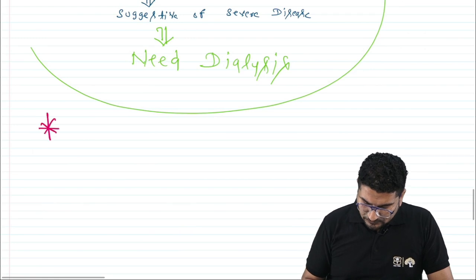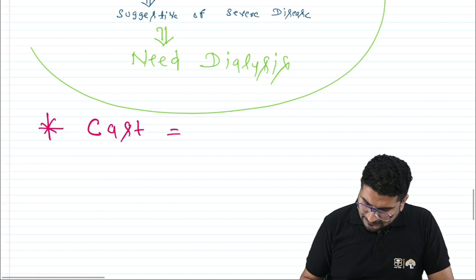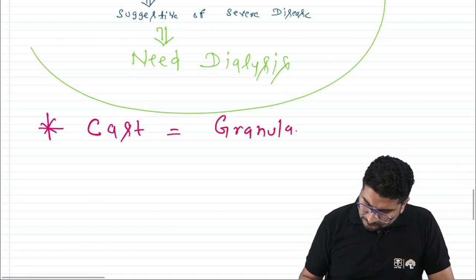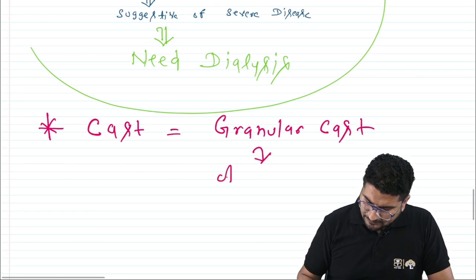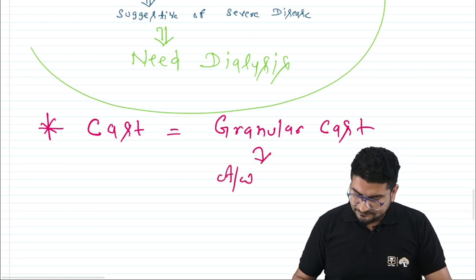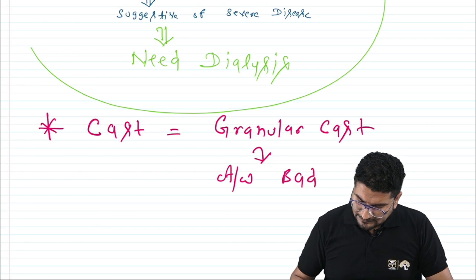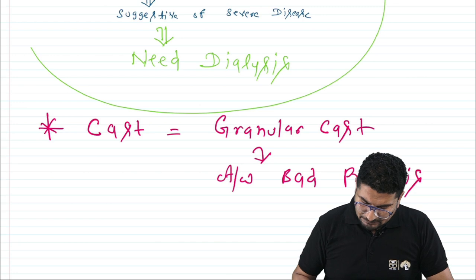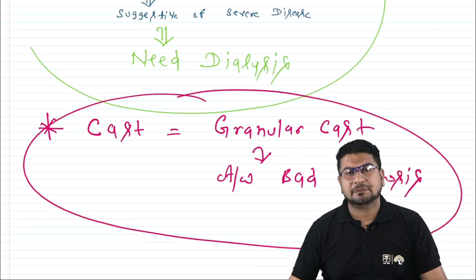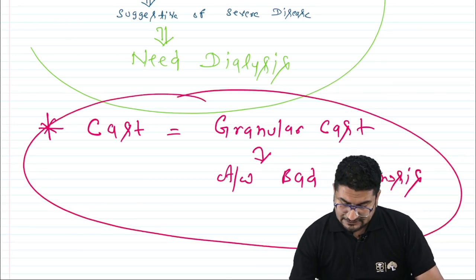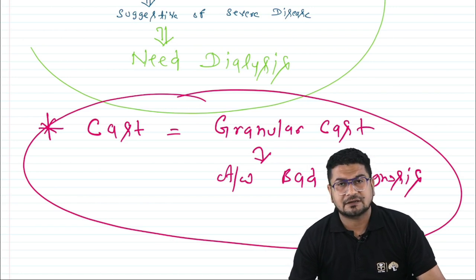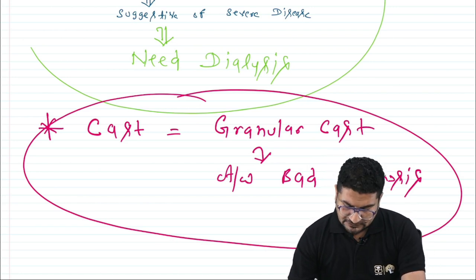Granular casts in urine are found in AKI and are also a poor prognostic sign, suggesting the patient may need dialysis or even transplant.